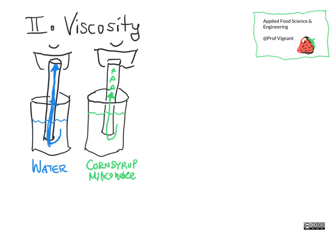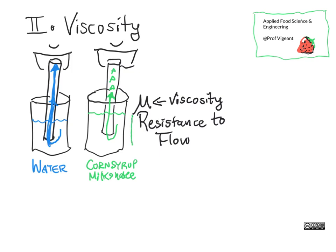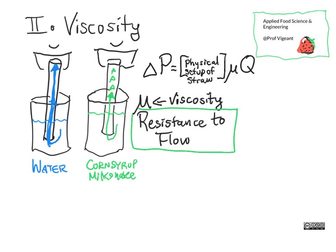What you're noticing here is a difference in viscosity. Viscosity — represented by the symbol η — is most easily thought of as the resistance of a fluid to flow. Here is a simplified equation that describes what's going on in our drinking-with-a-straw example. This is called the Poiseuille's Law or the Hagen-Poiseuille Law, and it states that the pressure difference equals the flow rate times a proportionality constant.